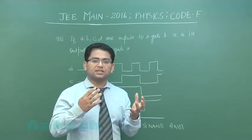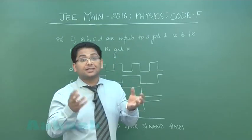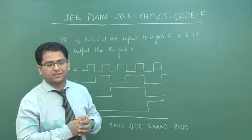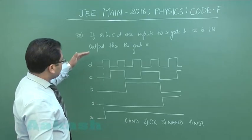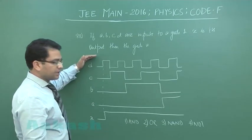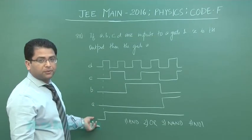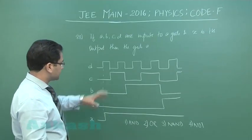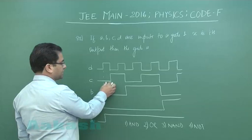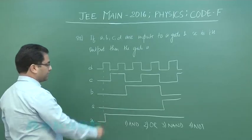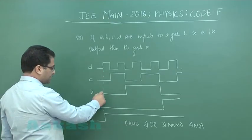Here A, B, C, D are inputs to a gate and X is the output. If you're not used to reading this sort of pulse, it's quite simple: 0, 1, 0, 1, 0, 0, 1 in that way. Here you can see when four inputs are zero, the output is zero.